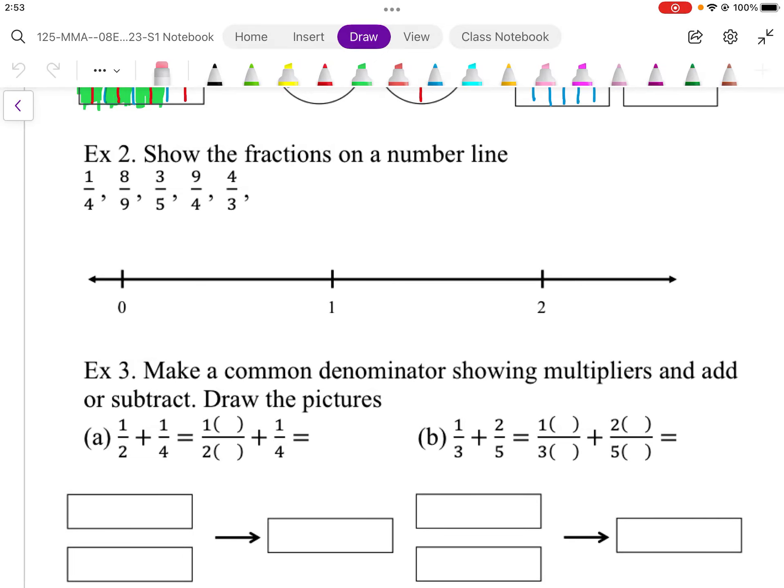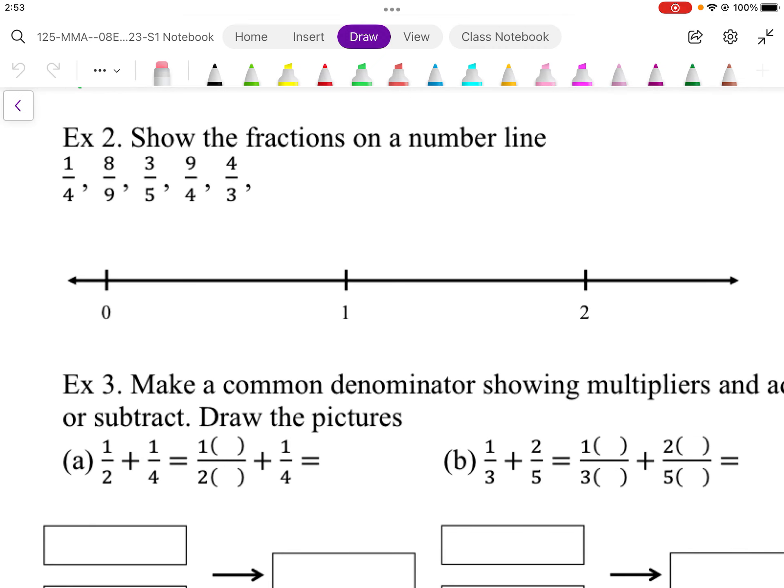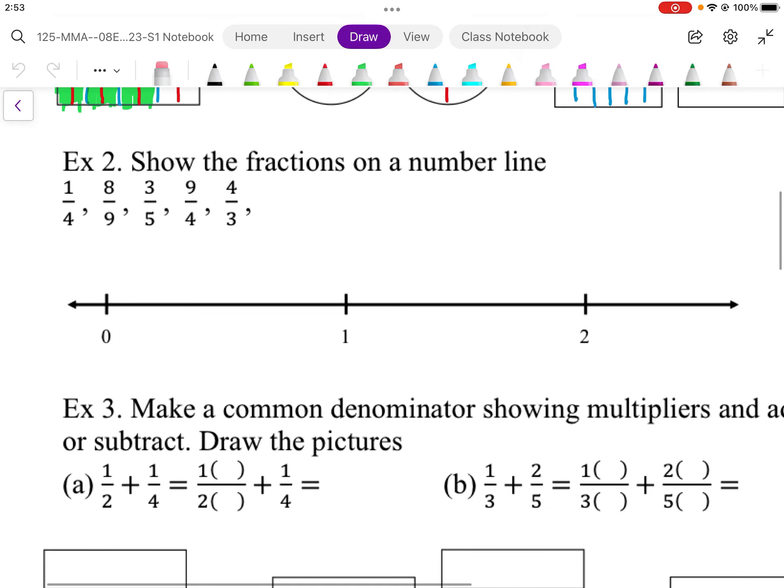To show these fractions on a number line, we can figure out how they are relative to some whole numbers. So for example, we know that this number here is very close to 1 and this one is over 2.